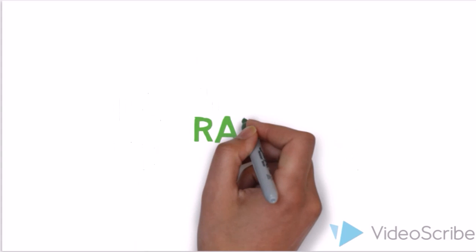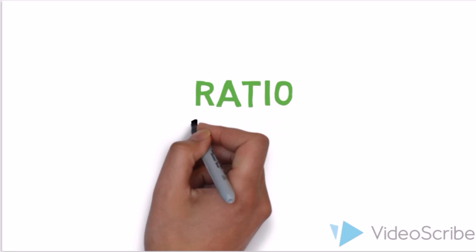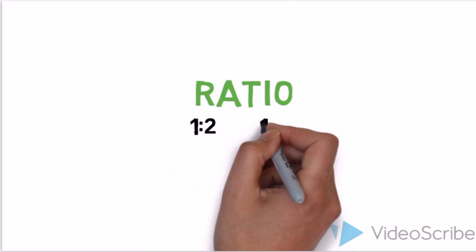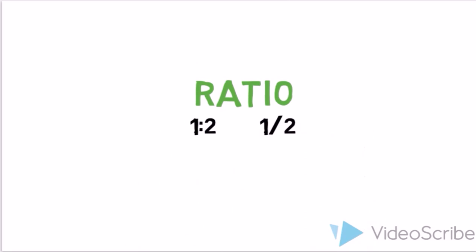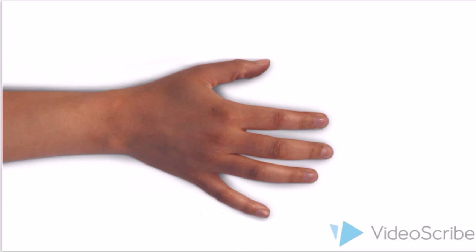In ratio and proportion, a ratio is the relationship between two numbers or two magnitudes of the same kind. The expression 1 is to 2, 1 over 2, 1 divided by 2, indicate ratios. We are actually comparing or showing the relationship between 1 and 2.